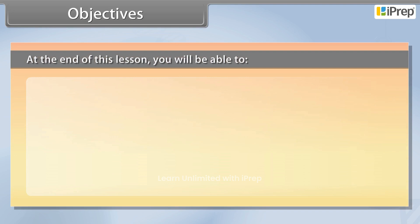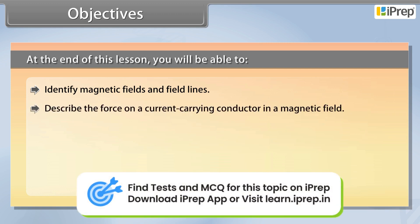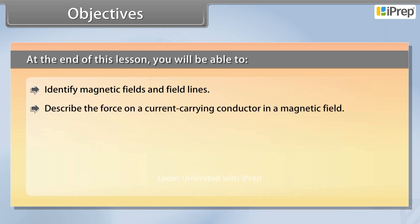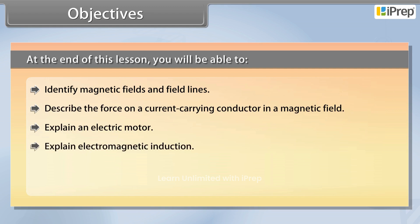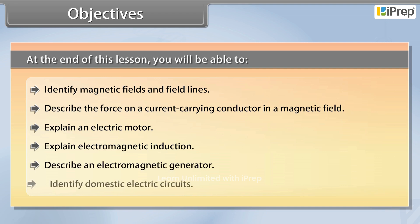At the end of this lesson, you'll be able to: identify magnetic fields and field lines, describe the force on a current-carrying conductor in a magnetic field, explain an electric motor, explain electromagnetic induction, and describe an electromagnetic generator.